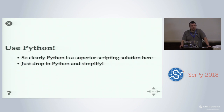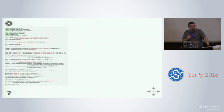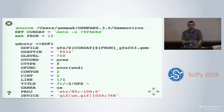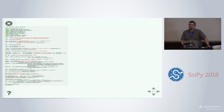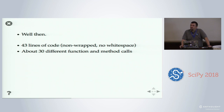So we'll just use Python. Python's clearly a superior scripting and analysis solution, and we'll just drop in the Python code and life will be easier, right? Well, there's a page of code — just get an idea for the magnitude. We went from that GEMPACK script, which is crufty, to something much longer. Forty-three lines of code — without any white space or wrapping — that's just individual statements, 30 different function calls and methods, to get something comparable to what GEMPACK was doing in about a third to a half the code size.